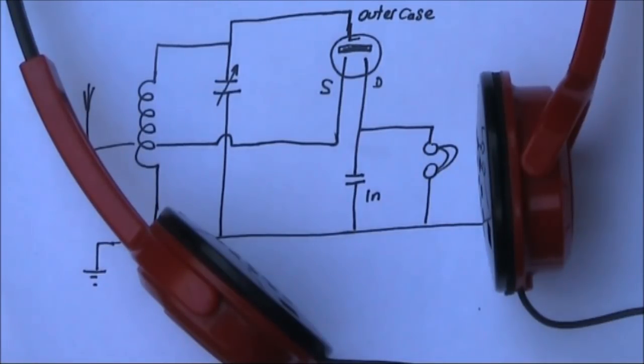With this crystal set circuit the great strength about it is it does work with a wide variety of headphone or earphone impedances. Whereas with a normal diode crystal set you usually just have to use high impedance phones or obtain a transformer.